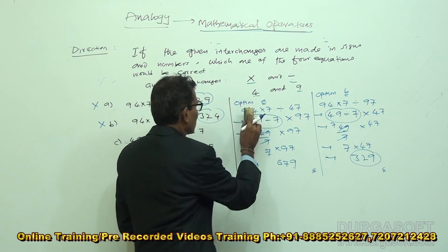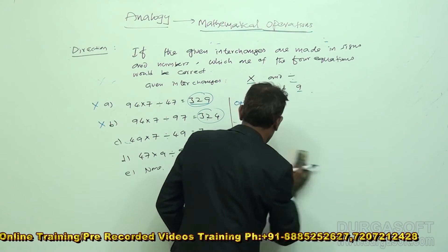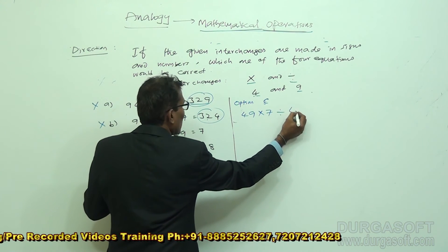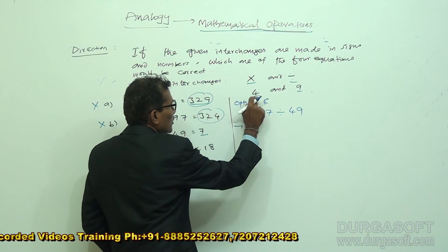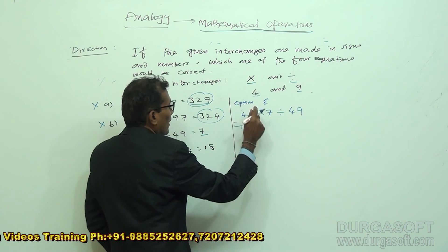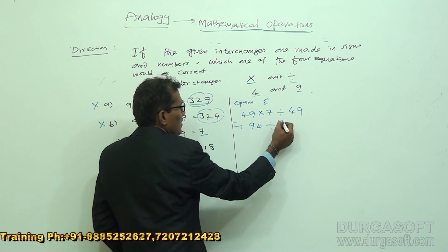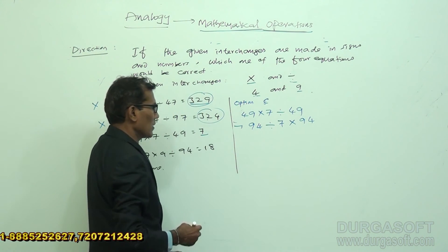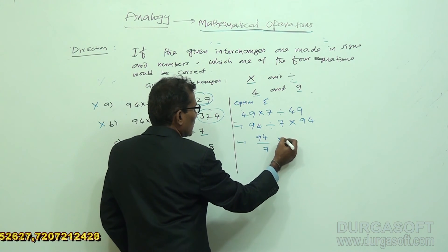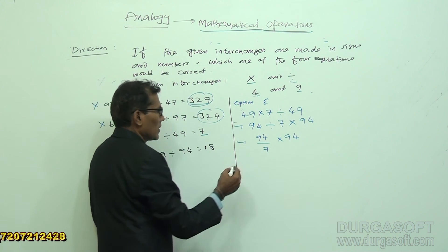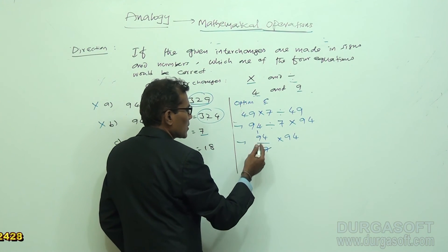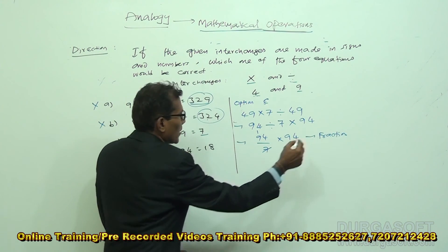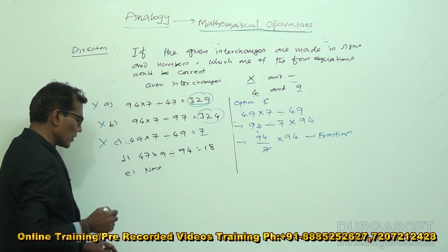Now let us check option C. The expression is 49 × 7 ÷ 49, result should be 7. After changes: 4 replaced by 9 and 9 replaced by 4 gives 94; multiplication changed to division; 7 stays; division changed to multiplication; in 49, 4 and 9 are exchanged giving 94. We get 94 ÷ 7 × 94. Since 94 is not exactly divisible by 7, we get a fraction. But the required result is 7, an integer. So option C is wrong.